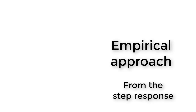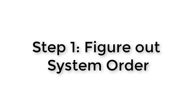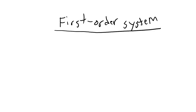Today we're going to be looking at the empirical approach, and specifically we're going to be getting our information from the step response that we collect from our system. In creating a system model, the first step is to figure out the system order. The order of a system refers to the highest derivative in the system equation. Almost all of the systems you'll encounter can be sufficiently approximated as either a first order system, a second order system, or a third order system. Once you know the order of the system, you also have a basic form of the differential equation that describes that system.